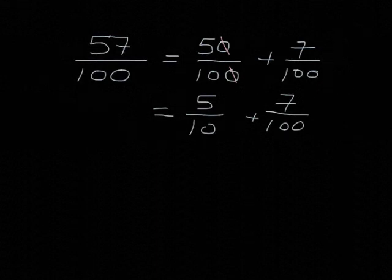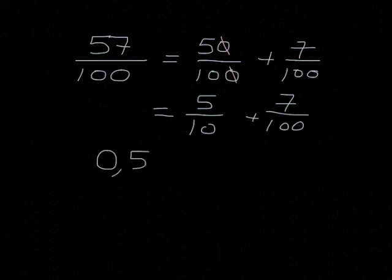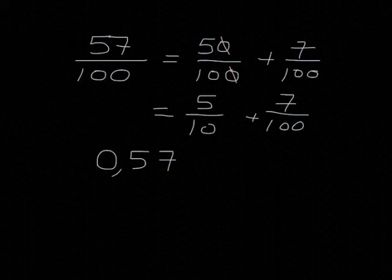Now, it's very easy to see in terms of our place value. We've got no units, we've got 5 tenths and we've got 7 hundredths. So we get 0.57 as we always have. Now, I'm also going to show you a little trick that helps us to do this more easily. If, for example, you have a look at this 57 over 100,